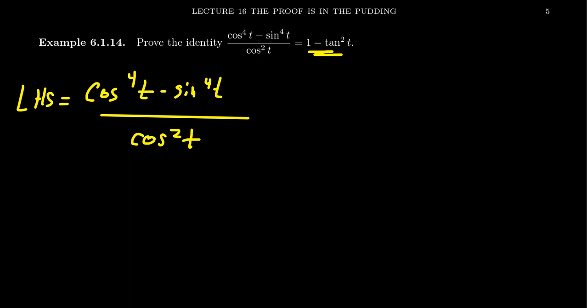So how in the world are we going to do that? We've got to simplify some things. First of all, the numerator here has these fourth powers, but in the end we don't have any fourth powers whatsoever — we only have squares. How can we get rid of them? Well, it turns out an algebraic factorization is going to be very helpful for us here.